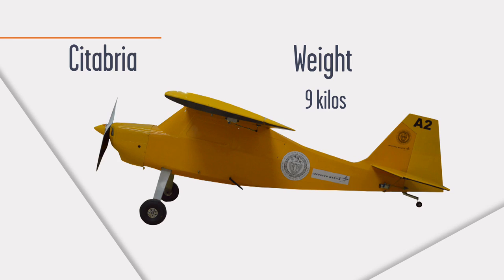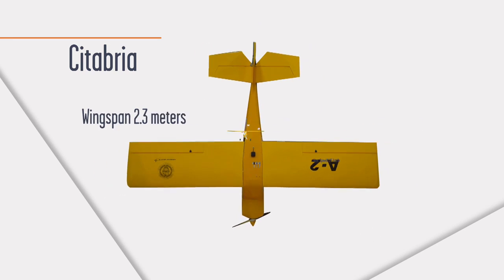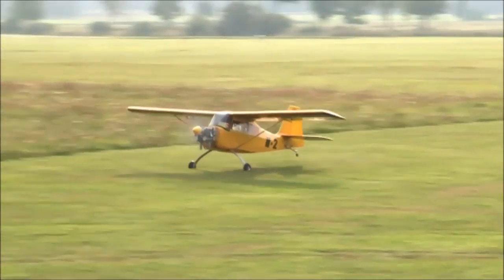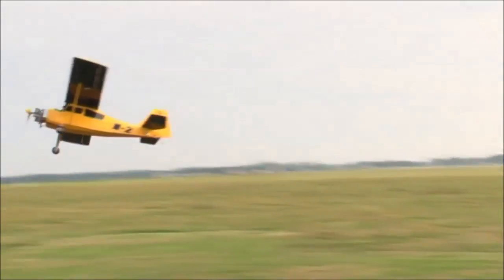Citabria is a self-propelled aircraft. It weighs 9 kilos and the wingspan is 2.3 meters. Its maximum speed is over 135 kilometers per hour.